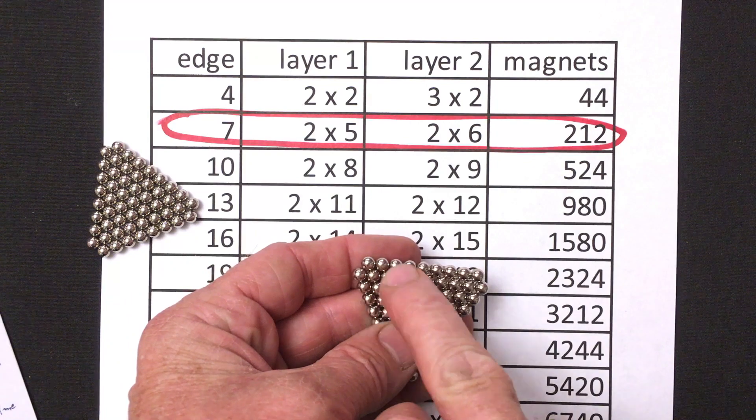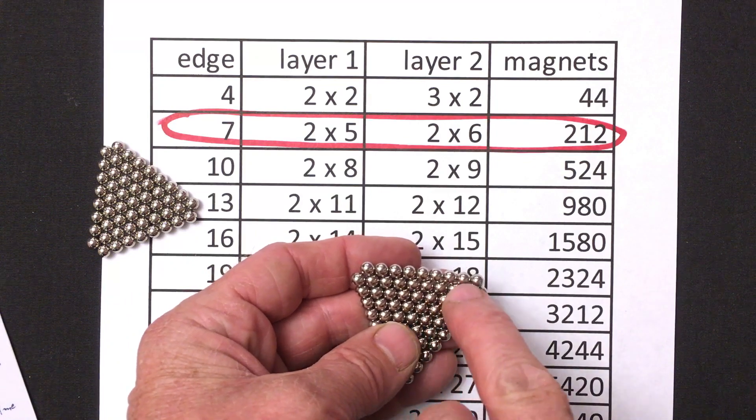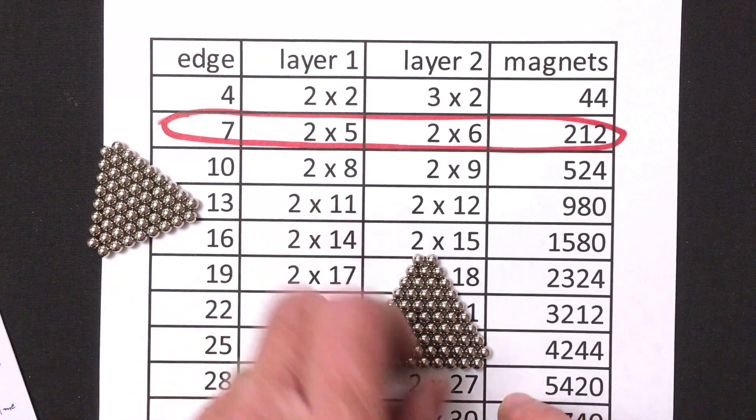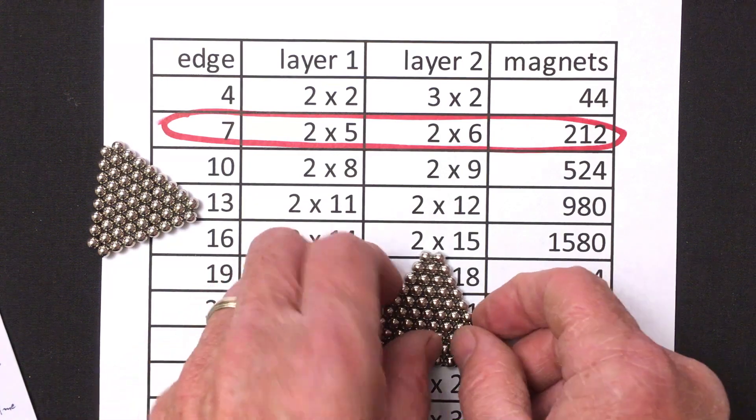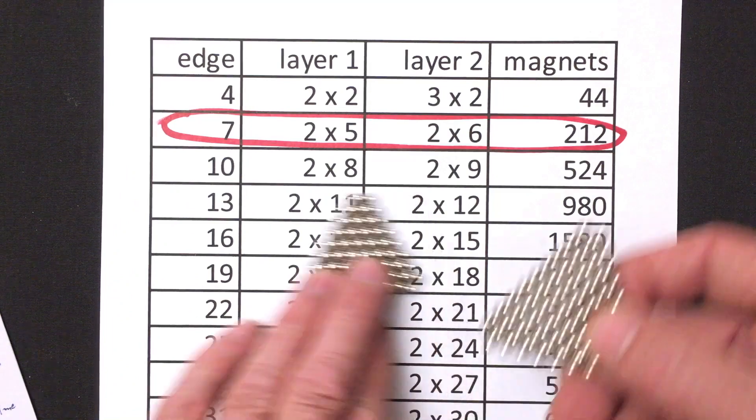So this is now 1, 2, 3, 4, 5, 6, 7, 8, 9. So 2 by 9. It's exactly what we need for the bottom layer 2. So now here's layer 1 and here's layer 2.